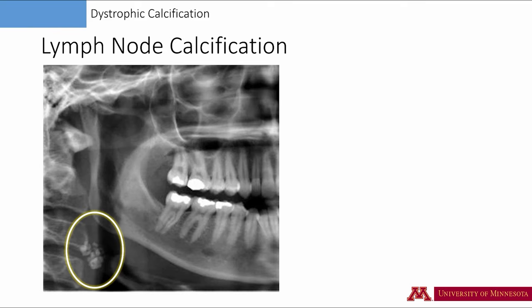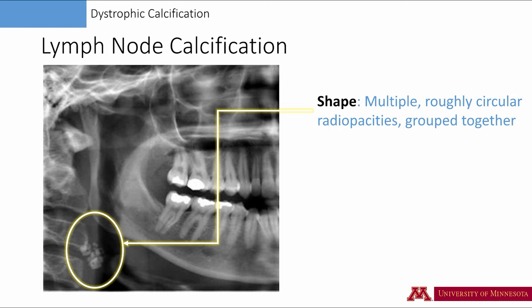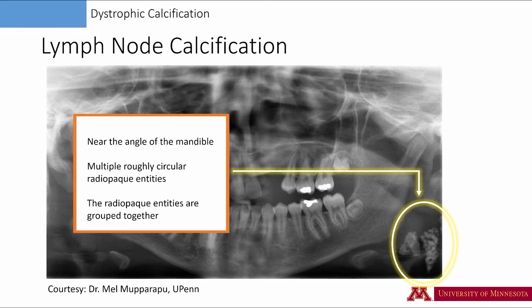Here is one example of lymph node calcification. The location is critical for the diagnosis. The radiopacities are near the angle of the mandible — multiple, roughly circular radiopaque masses that have grouped together. The imaginary outline is almost oval. You may visualize these calcifications similar to a bunch of grapes. This is another example of a lymph node calcification — again multiple radiopaque masses grouped together, giving an appearance of a bunch of grapes. The location remains critical for the diagnosis. These calcifications are near the angle of the mandible, and we see these masses are superimposed over the hyoid bone.